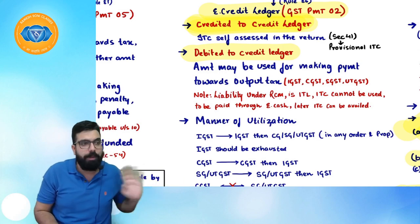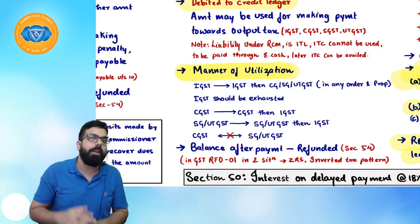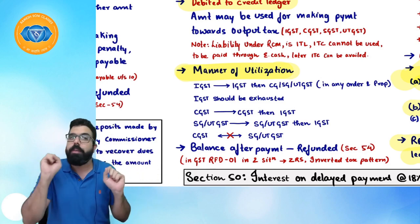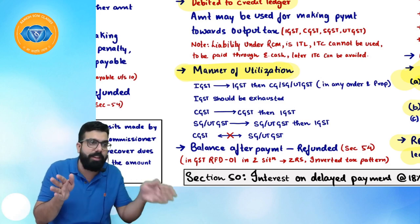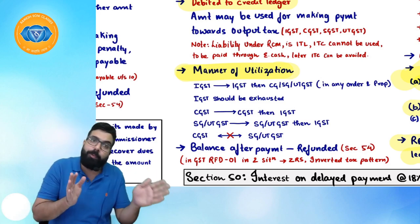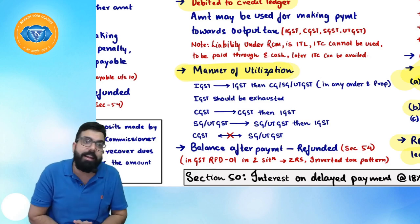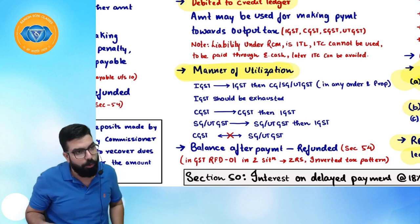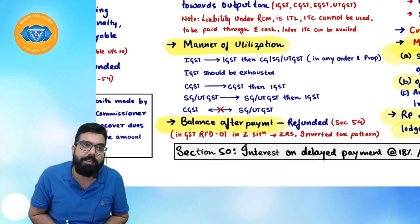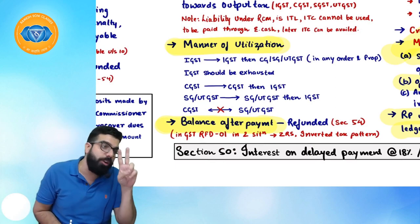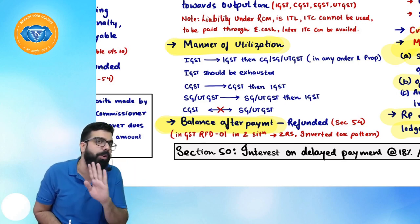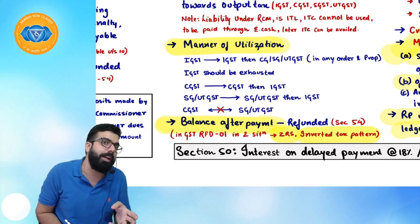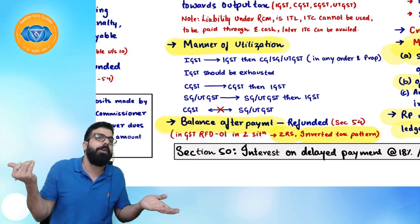The manner of utilization of e-credit ledger: first IGST should be used for IGST, then IGST for CGST or SGST in any proportion. Once IGST is exhausted, CGST will be used for CGST and then for IGST. SGST will be used for SGST and then for IGST. Never use CGST for SGST or SGST for CGST. Refund from e-credit ledger is allowed only in two situations: zero-rated supply refund and inverted tax structure (where output tax is lower than input tax credit).